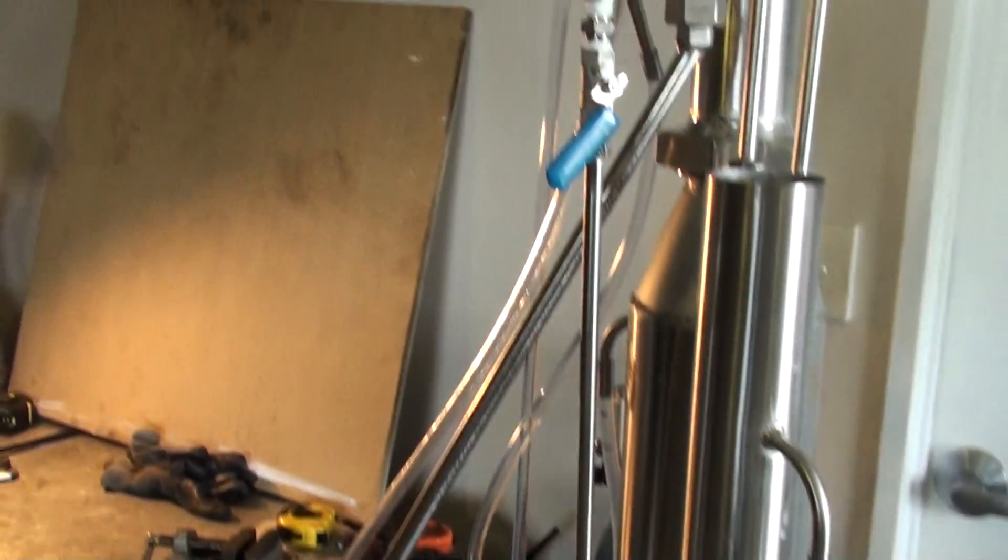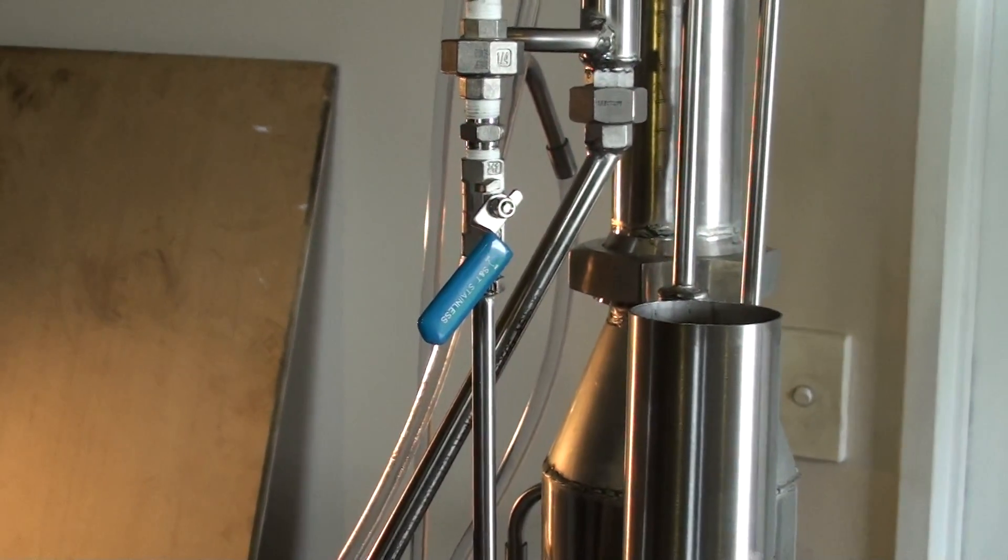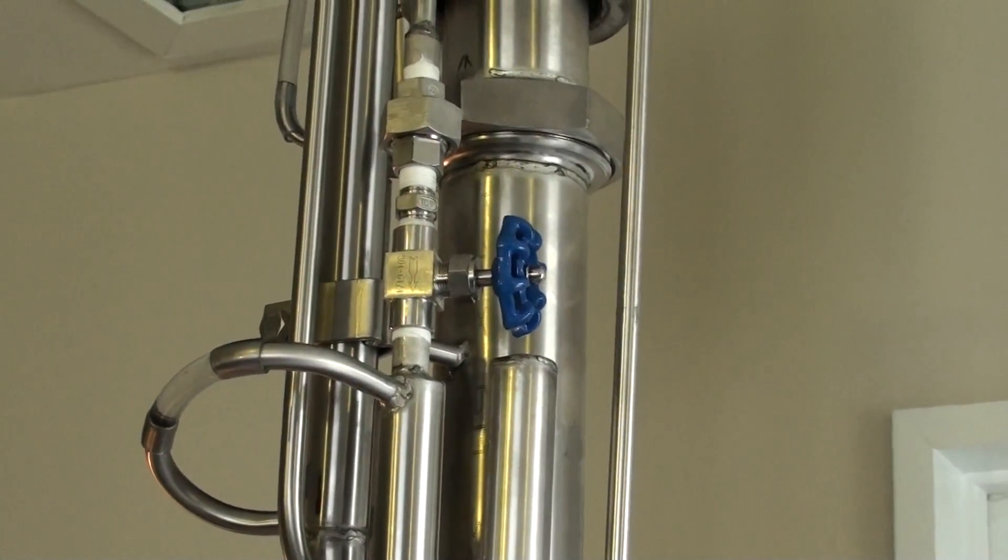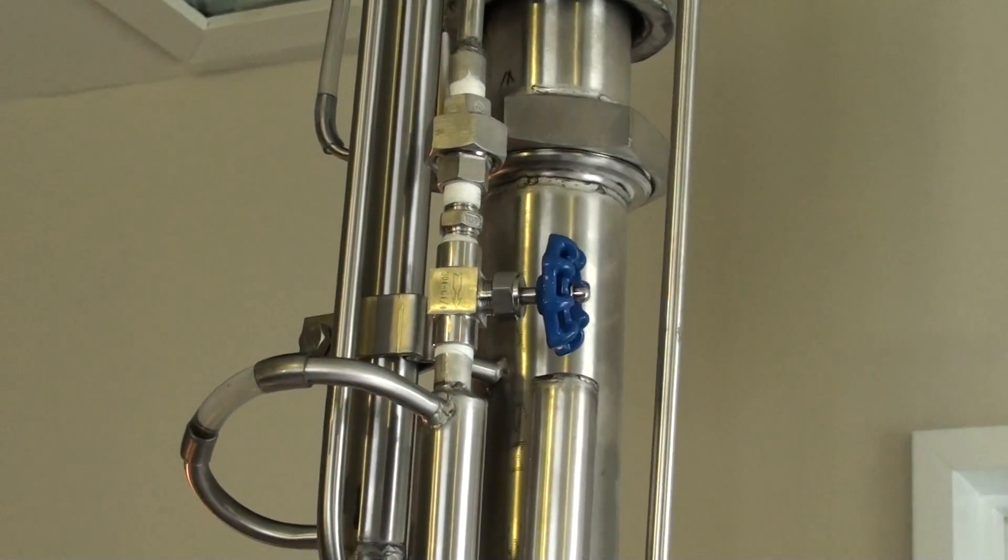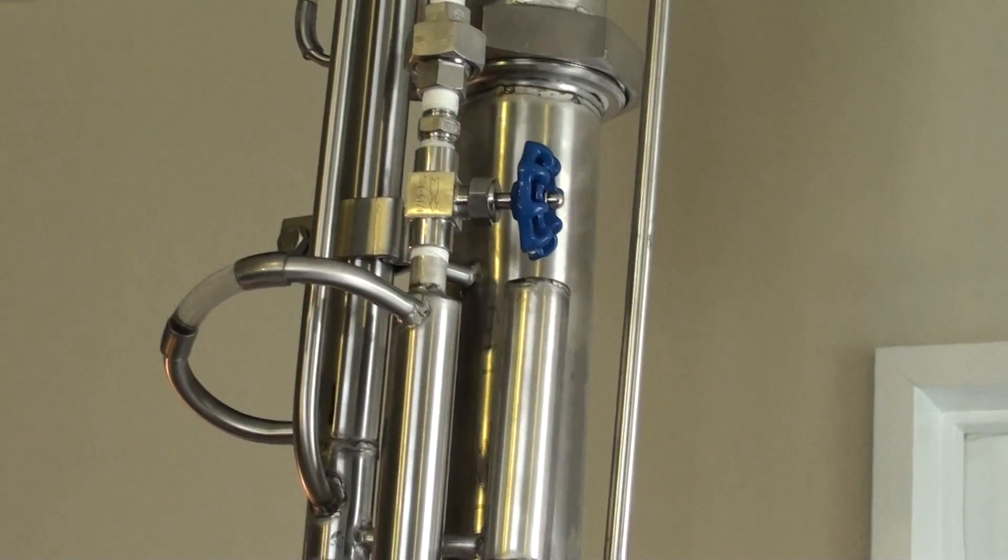There's a steam generator at the bottom, a valve that controls the wash supply into the column, and a reflux control valve that controls the speed of the flow and percentage of the alcohol coming out.